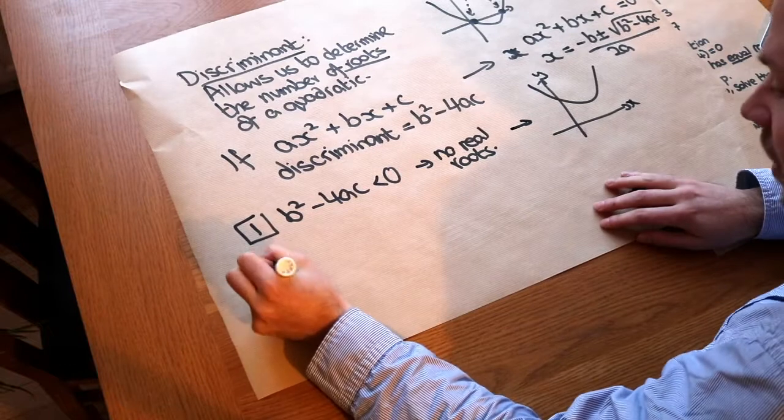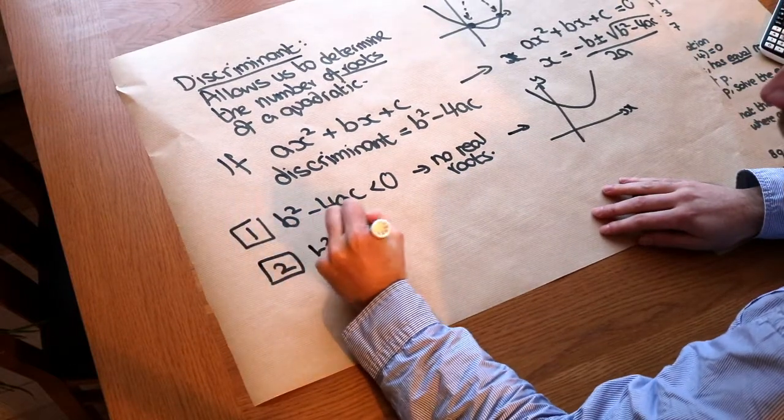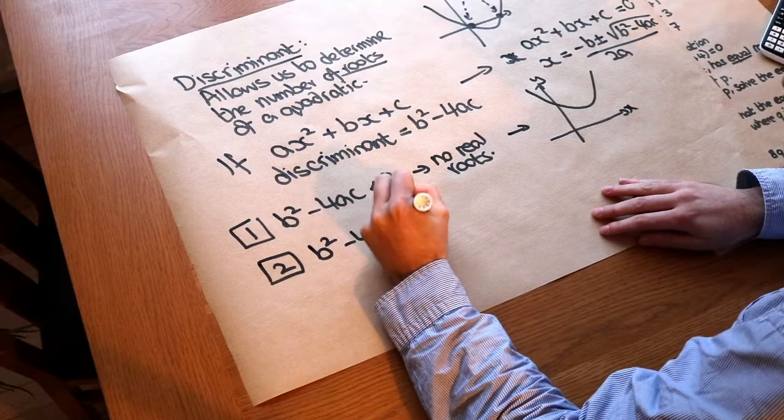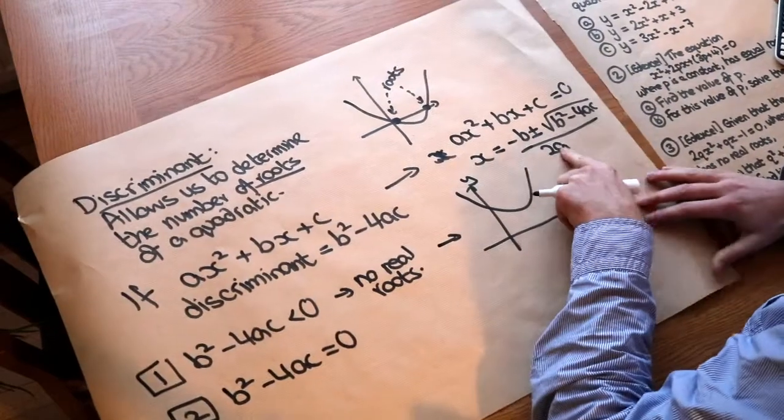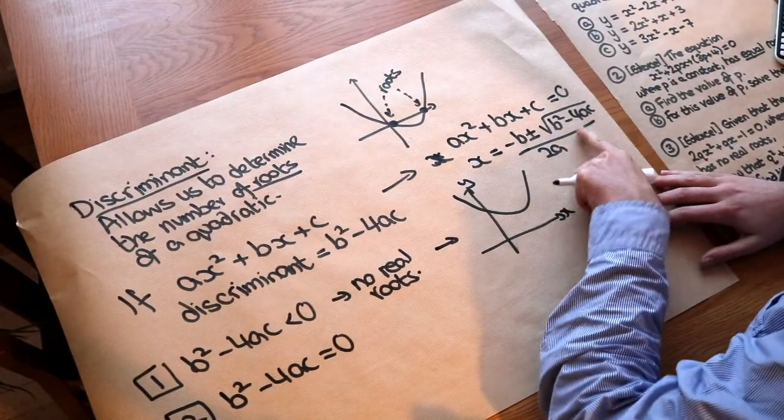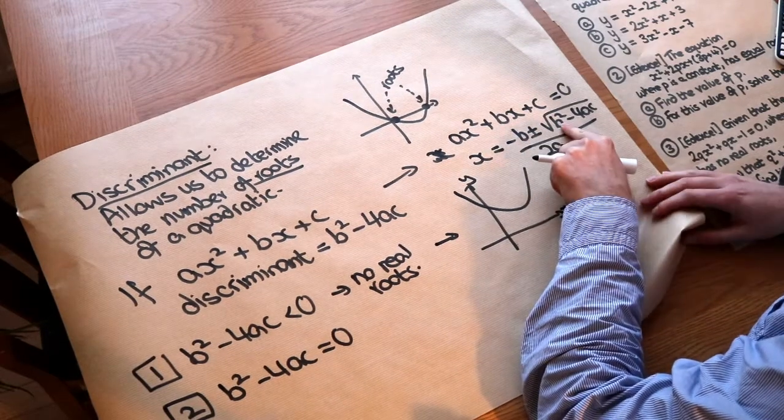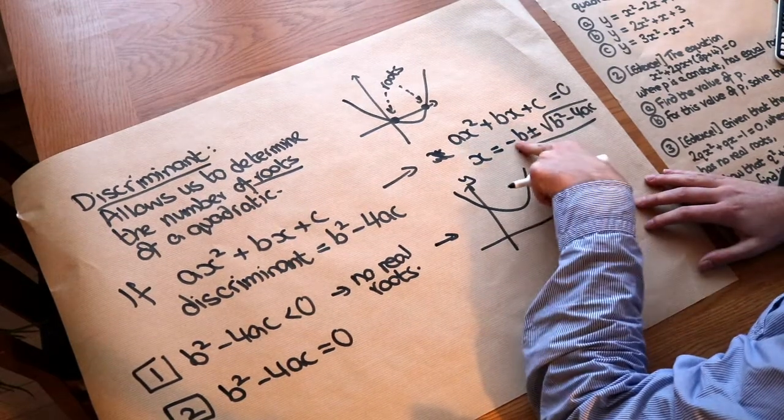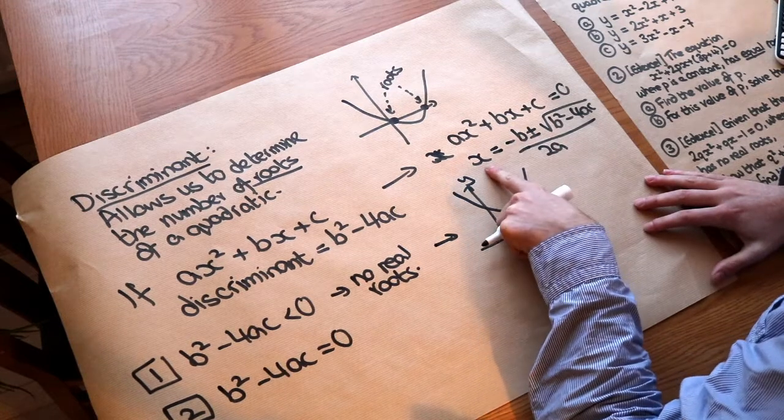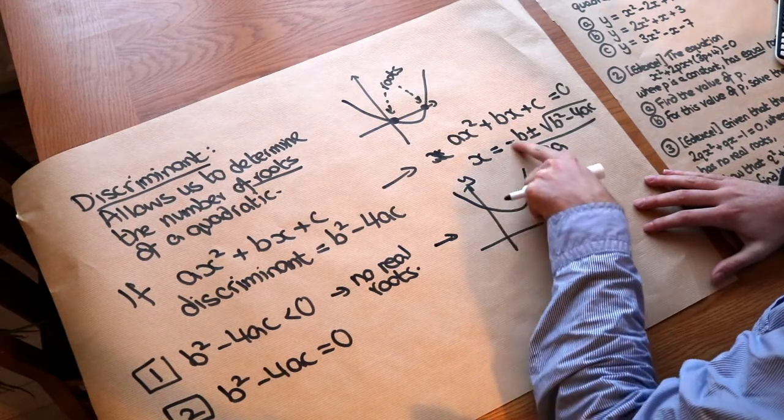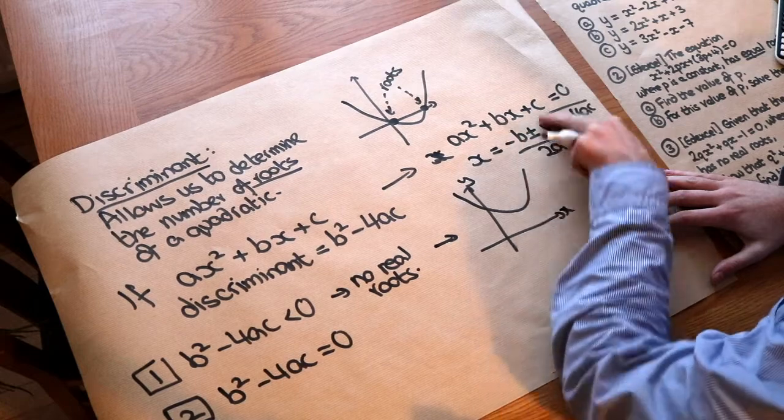What about the other situations? Now if b² - 4ac was equal to 0, then let's look at this quadratic equation. That is 0 there, so we'd have -b + 0, and -b - 0. Now either way we get -b, so we would only actually get one solution to x. x would just be equal to -b/2a, because this is just 0.